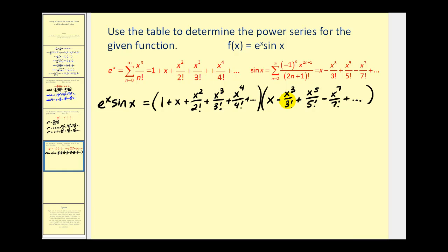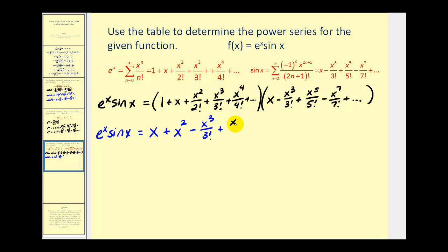Because there are infinitely many terms in each power series, we're going to multiply them so that we group same-degree terms together. There's only one degree one term: one times x. There's also only one x squared term: x times x. For degree three, multiplying one by negative x cubed over three factorial gives negative x cubed over three factorial, and multiplying x squared over two factorial by x gives plus x cubed over two factorial. So there are two degree three terms.